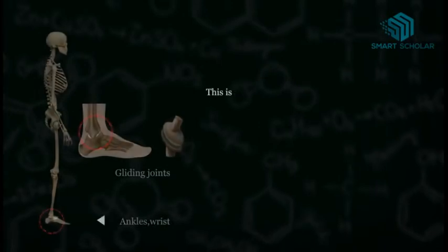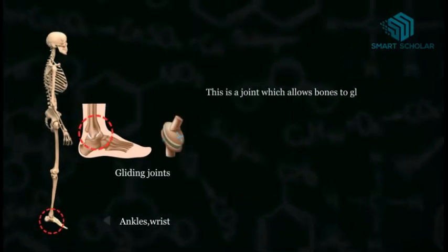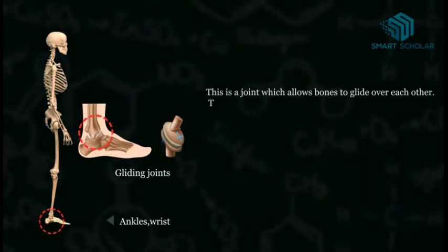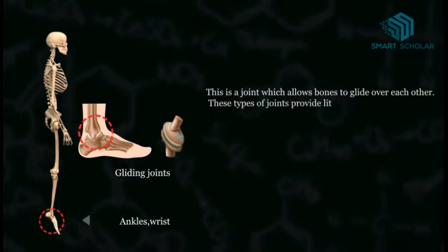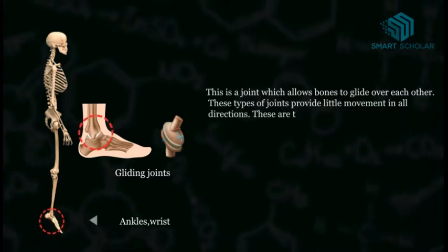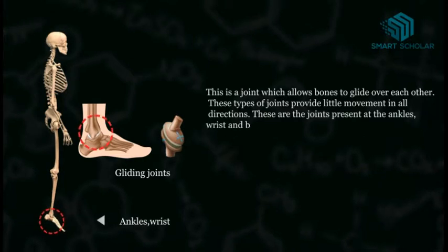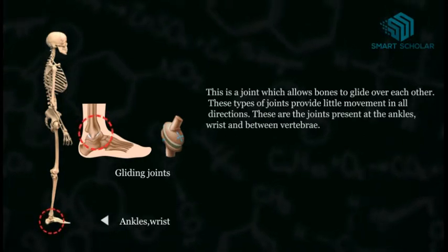Gliding joints. This is a joint which allows bones to glide over each other. These types of joints provide little movement in all directions. They are the joints present at the ankles, wrist, and between the vertebrae.